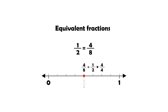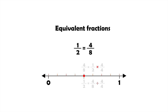Similarly, we can divide both the numerator and denominator of the fraction four eighths by four. When we divide four by four and eight by four, the result will be one half. So to generate equivalent fractions for a given fraction, we can multiply or divide the numerator and denominator by the same number.